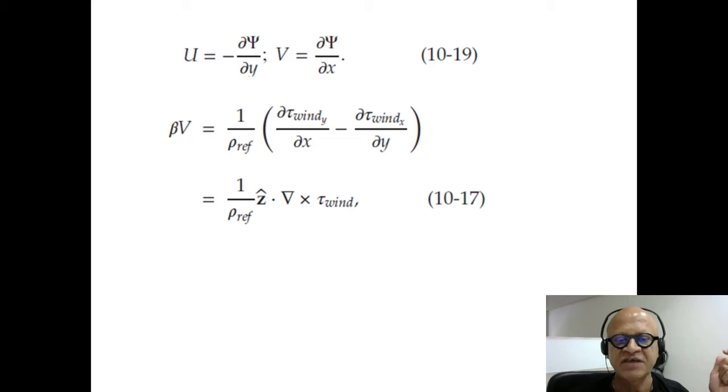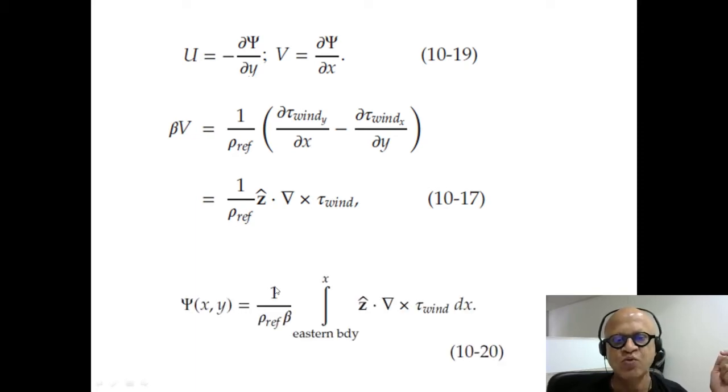Beta V equals curl of the wind divided by rho ref, and the stream function is essentially 1 over rho ref beta, and we can integrate this from the eastern boundary to any longitude in the middle of the ocean, or all the way to the boundary. And this is a first-order equation, so obviously we can only apply one boundary condition.